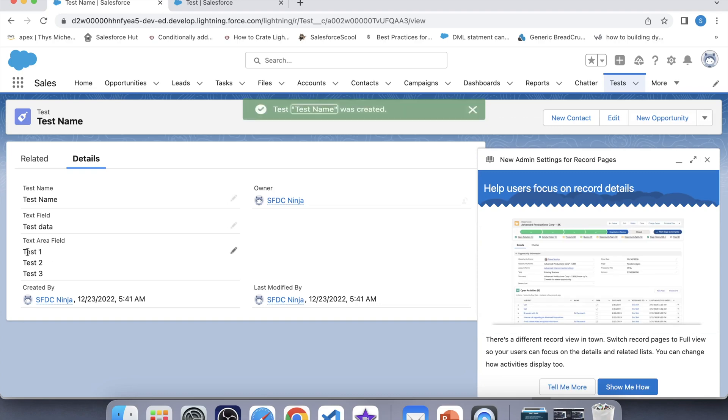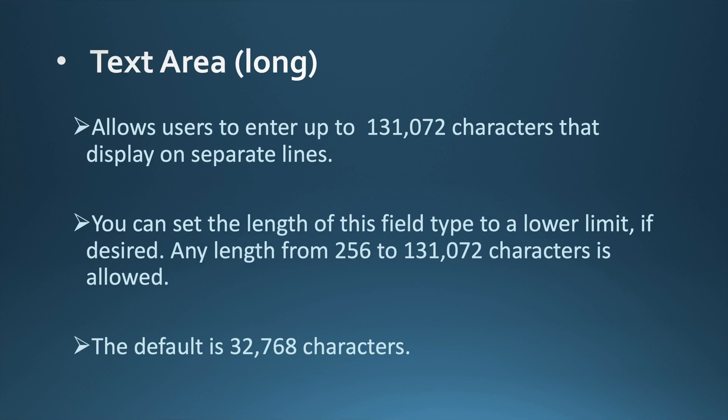You can see the data is stored in multiple lines. Now let's move to the next field, which is Text Area Long. In this field you can store up to 131,072 characters in separate lines, similar to the description and Text Area field. You can also set its length to a lower limit, but it should start from 256. Its default length is 32,768 characters. Also, this field is not available for activities or the Product on Opportunity object.